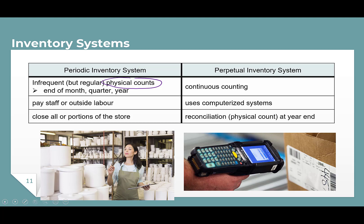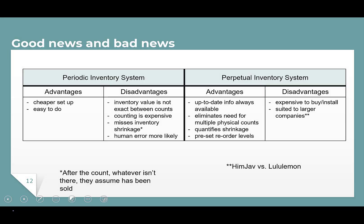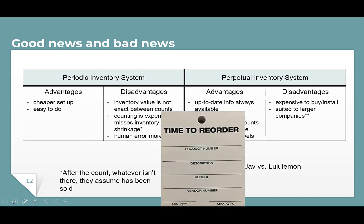That takes us to the advantages and disadvantages of these two systems — I'm going to ask you to pause the video and write these down. One thing I do want to point out is that with the periodic system, it's hard to know when to reorder inventory because the company is relying on a physical count. In some stores, there are little cards placed on the shelves among the inventory. Imagine a dozen boxes of cereal on a shelf — this card is placed behind the ninth box, and when that ninth box is sold, an employee will see this card and know that it's time to reorder more cereal to restock the shelves.